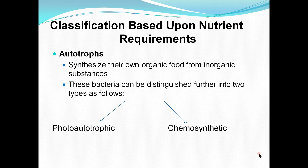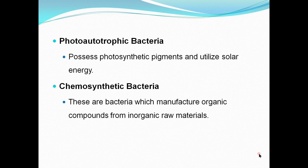Based on nutritional requirements, bacteria are classified into autotrophic bacteria — which are able to synthesize their own food from inorganic substances — and further classified into photoautotrophic and chemosynthetic. Photoautotrophic bacteria generate food in the presence of light and cannot synthesize food without it. Chemosynthetic bacteria require chemical materials to synthesize their food.